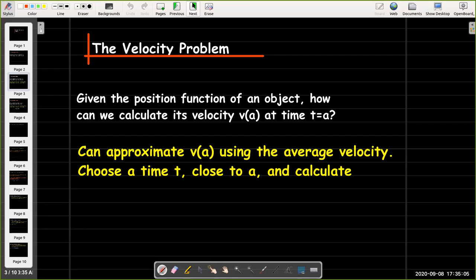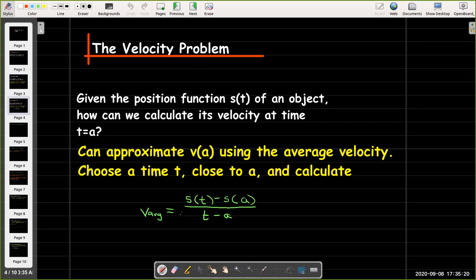Now the best that we could do before was to approximate the velocity at a using the average velocity. We would choose a time t which was close to a, and calculate the quotient of the difference in the position over the difference in the time. That would give us the average velocity.